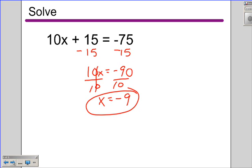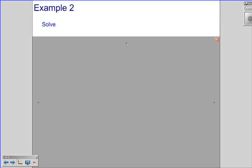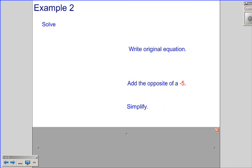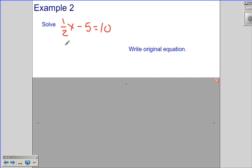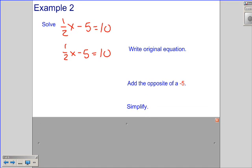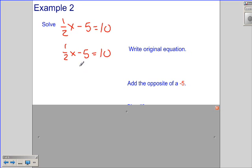So a couple of problems there that we've worked through. Let's take a look at another example here. The problem that we had was 1 half x minus 5 equals 10. I'm going to solve this for x. I'm going to rewrite my original equation. I need to add the opposite of a negative 5. I'm not ready to work with the number by the variable, so I'm going to add 5 to both sides. And that gives me 1 half x equals 15.